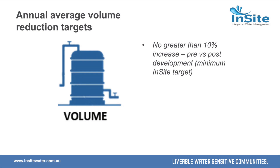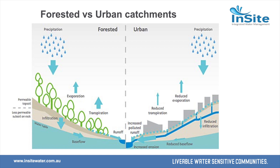The first criterion is average annual volume reduction targets. A lot of this work comes from John Argue at the University of SA, who for a long time has been recommending volume-based targets rather than event-based targets. This is also built into the new environmental regulations in Victoria, and the Australian Rainfall and Runoff and the South Australian planning code also discuss it.